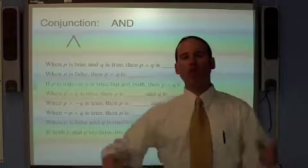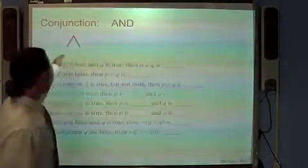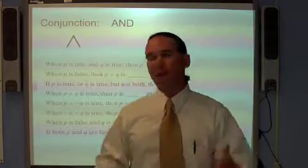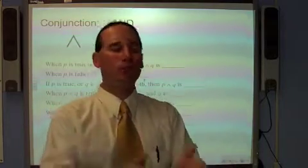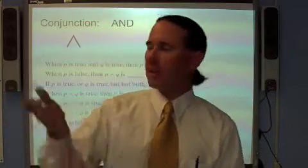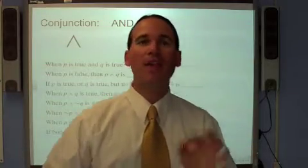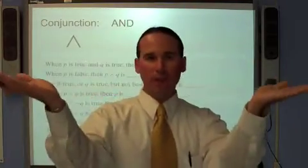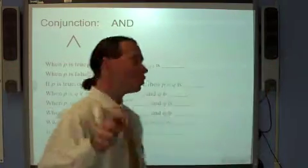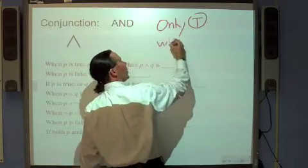Basic logic starts with conjunctions. A conjunction means an 'and' statement — this and that — and we use this symbol to represent it. A conjunction is only true when both parts are true. Think about it: if your parents said for your birthday, 'We're going to get you a computer and a thousand dollars,' and then your birthday comes and you get a computer but no money — did they tell the truth? No, they lied. You need both, so a conjunction is only true when both are true.